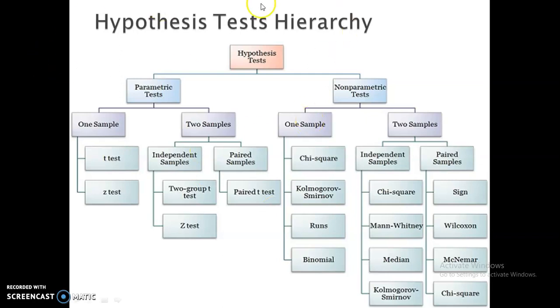Now see this chart. This is an upside-down tree which is showing the hypothesis test here. There are various types of hypothesis tests. Parametric test and non-parametric test are two broad categories. Parametric test can be based on one sample or two samples. If it is one sample we can go for a t-test or z-test. If there are two samples, again we have to check: are the samples independent or paired samples? If they are independent samples we will go for two-group t-test or z-test, or if it is paired sample then we will go for paired t-test or z-test.